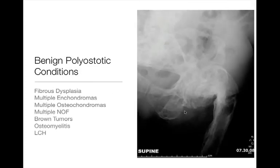Here is another image of polyostatic fibrous dysplasia. It's affecting multiple bones in the pelvis and also the proximal femur. The proximal femur is a favorite location for fibrous dysplasia, giving one of the classic shepherd's crook deformities — the femur is bowed and not normal in morphology, looking like an old gnarled wooden stick.